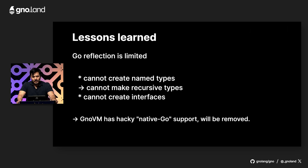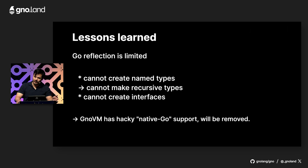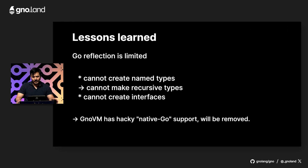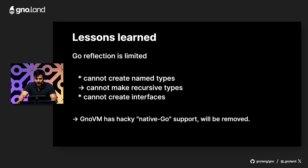Another lesson we learned early on is that Go's reflection system is limited. Originally, we tried to make seamless integration between Go and Gno values and logic, so you could run Gno code and Go code seamlessly integrated. But due to the limitations of Go's reflection system, this magical native Go integration is never going to be perfect, so we'll probably just remove it.